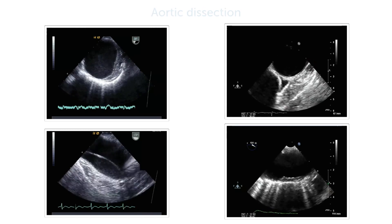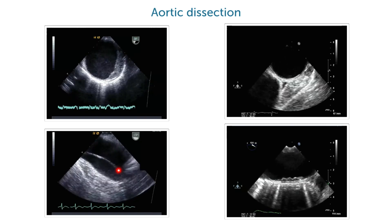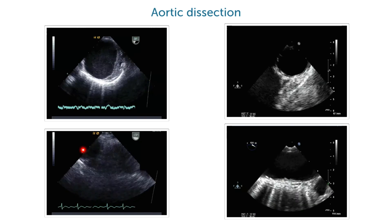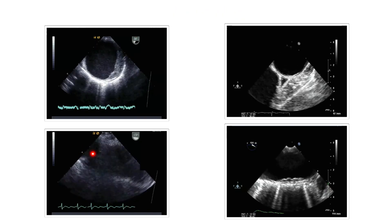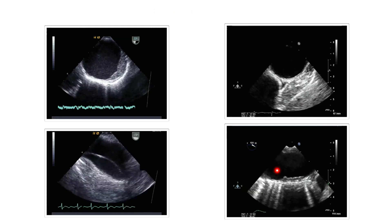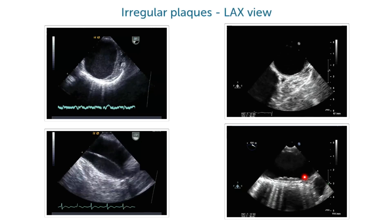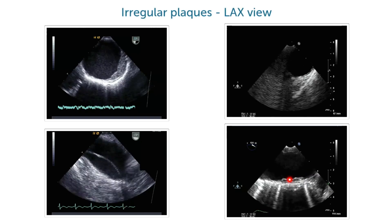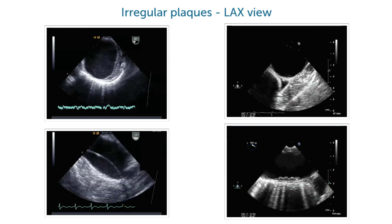A patient with dissection — look at this membrane here, this is dissection — and a patient who has irregular plaques here in the descending aorta seen in a longitudinal view.